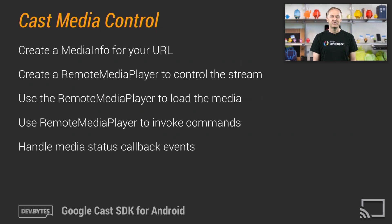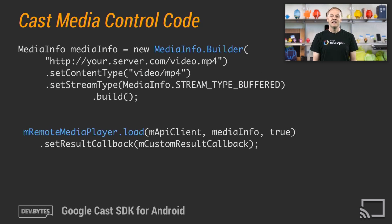Finally, to play media on the Receiver, the sender app has to create a MediaInfo instance with the URL of the media stream. The RemoteMediaPlayer class is then used to load that media stream on the Receiver. The sender app then invokes commands such as play and pause using the RemoteMediaPlayer. Let's take a look at an example of how to create a MediaInfo instance for a video stream. The video stream is loaded on the Receiver using the RemoteMediaPlayer instance. The result callback is invoked with the load command status.